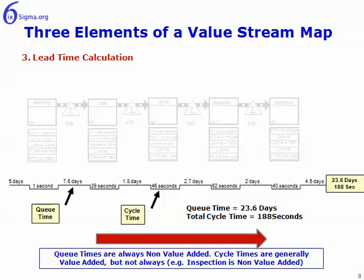In the lower third, we have the lead time calculation or the lead time ladder. Each of the cycle times are represented by the lower part of the ladder, and each of the queue times are represented by the upper part of the ladder. So five days on the left here — five days is a queue time — and then 7.6 days, those are all queue times. If we sum those up, the customer will see something on the order of about 24 days, and yet it only takes 188 seconds in production to actually manufacture. The difference is probably some form of non-value added.